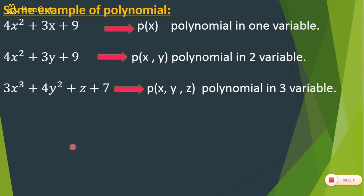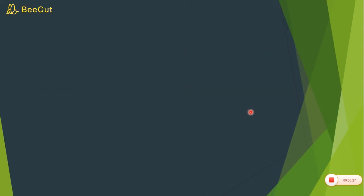In the polynomial p(x, y, z), we have taken x, y, and z as variables. If you take q, r, s instead, then it would be written as p(q, r, s). What is written inside the bracket represents the variables that are inside the polynomial. This is how we generally represent a polynomial.